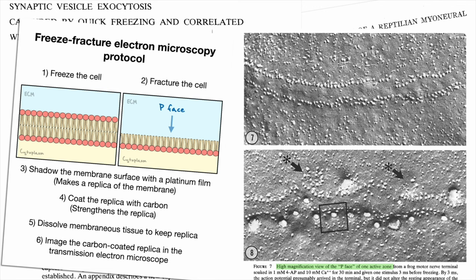To make sure they would be able to visualize the vesicles fusing, the team applied the drug 4-aminopyridine or 4-AP as abbreviated in their description. This drug is essentially a voltage-gated potassium channel blocker.